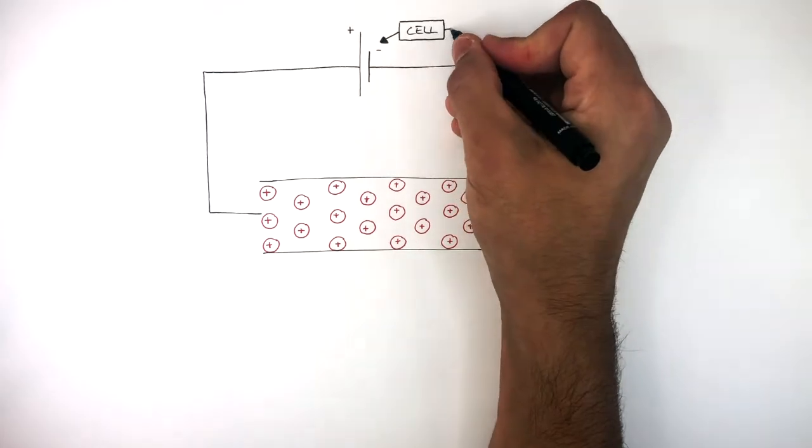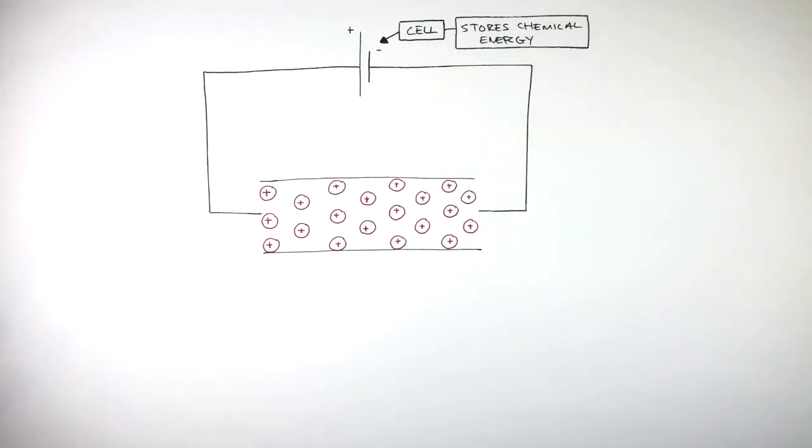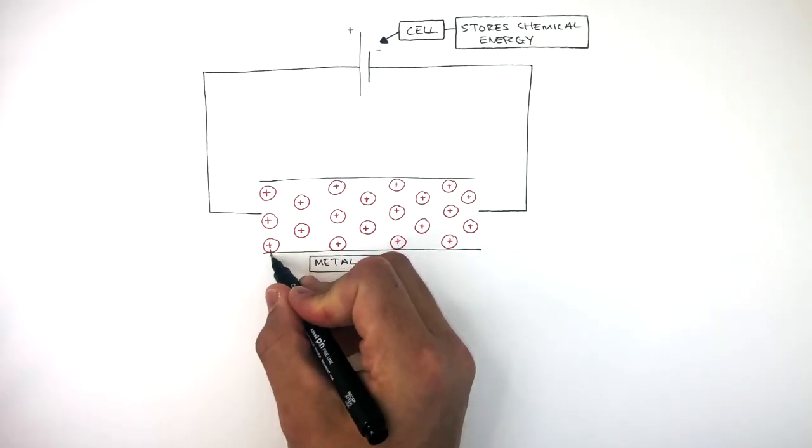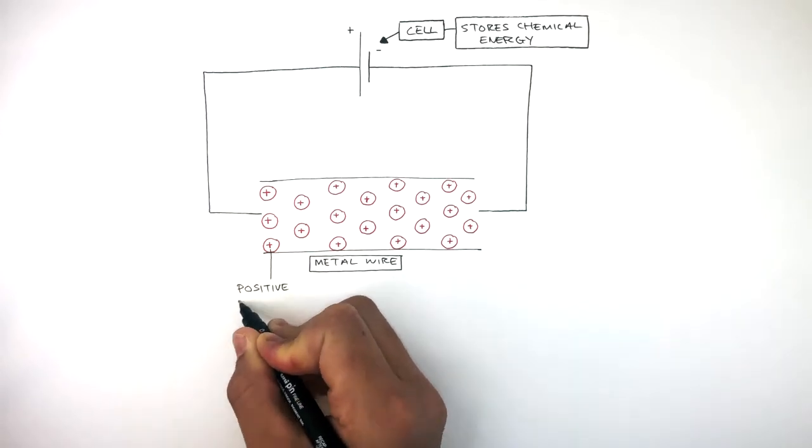This is the cell which stores chemical energy, and this is the metal wire where we can see a close-up. The red circles with crosses are the positive metal ions.